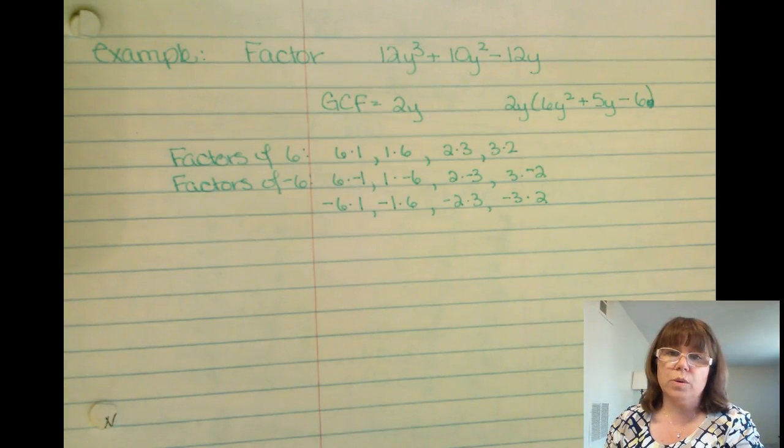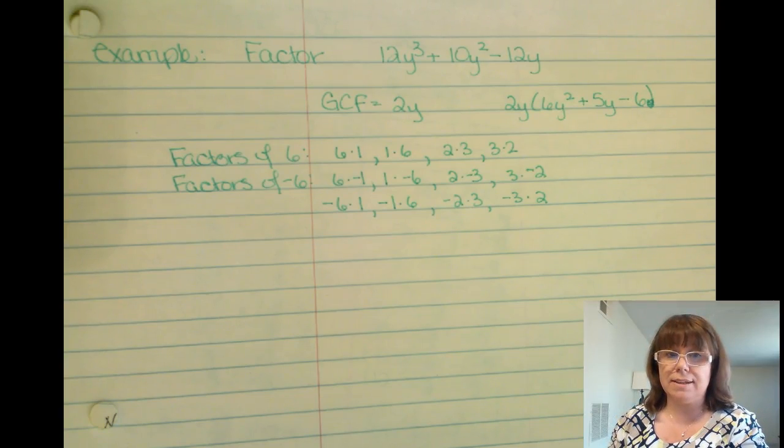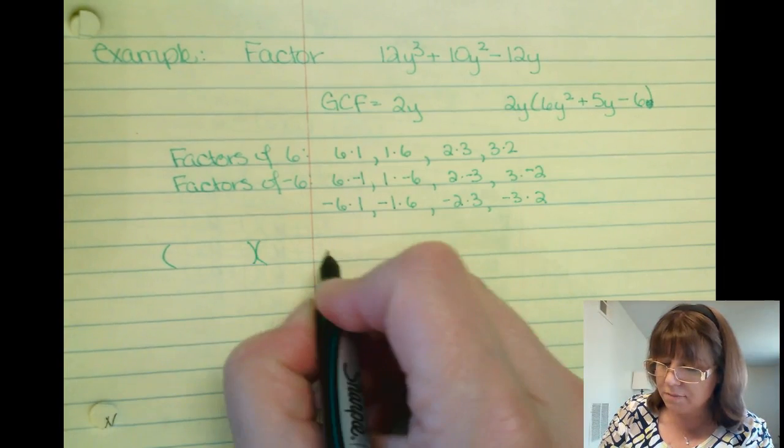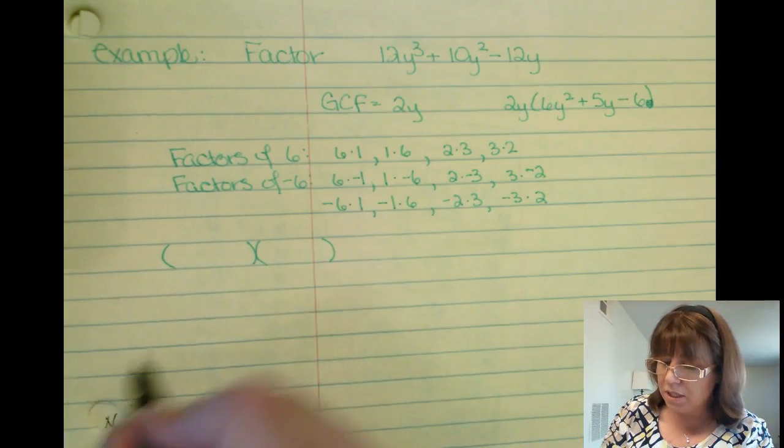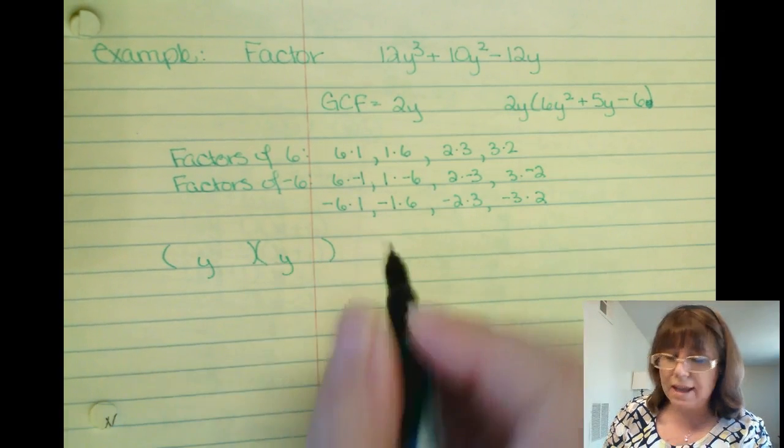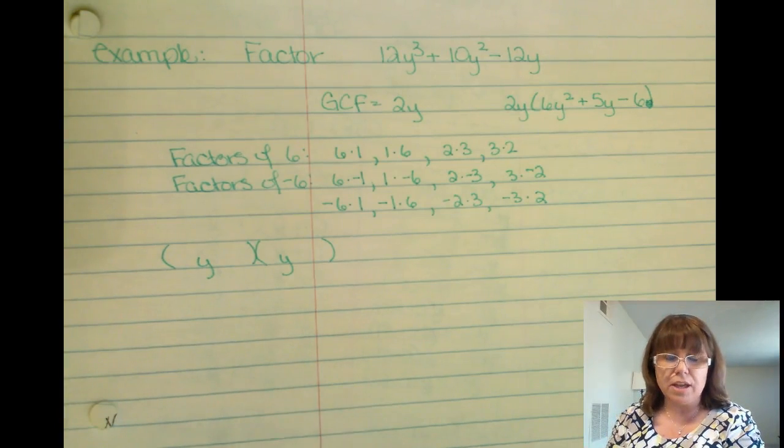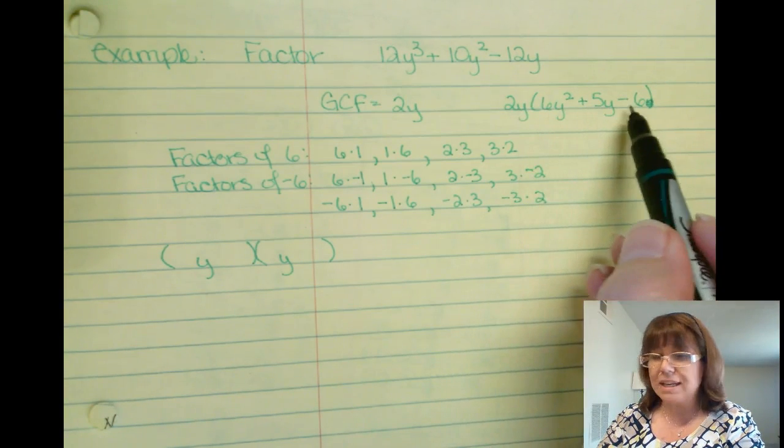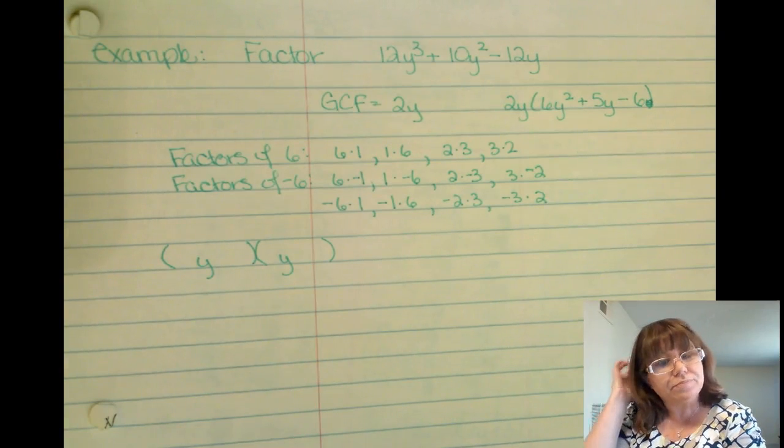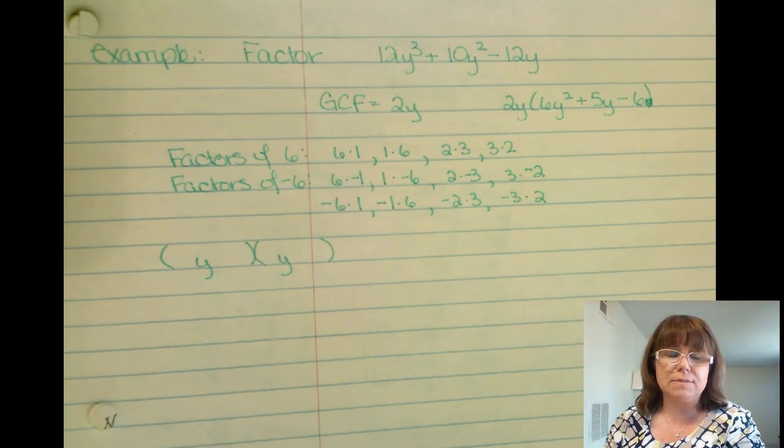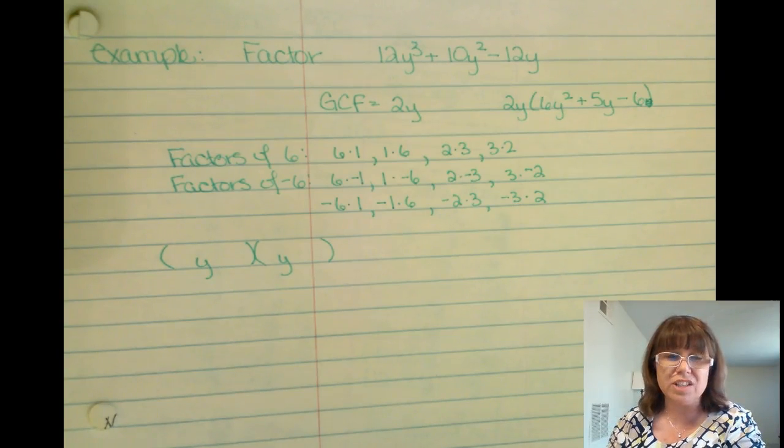Here's where your training, your math skills, are going to come in handy. Ultimately, I'm going to have two terms. There's going to be a something y and a something y, and you multiply them together, and then you'll get back to the original 6y squared plus 5y minus 6. Now here's the thing. I might be able to rule out all of the 6s. 6 times 1, 6 times negative 1, negative 6, all of those combinations. Here's why.